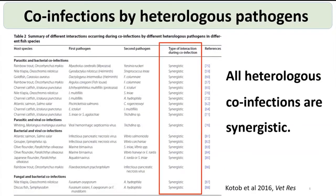This next table covers co-infections by heterologous pathogens — for example, parasites and bacteria, bacteria and viruses, and fungal and bacterial co-infections. What I want to highlight is that these co-infections tend to cause synergistic outcomes, meaning one pathogen helps the other, making things very unpleasant for the host. This is quite common in field aquaculture situations.